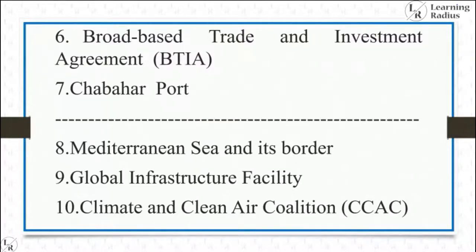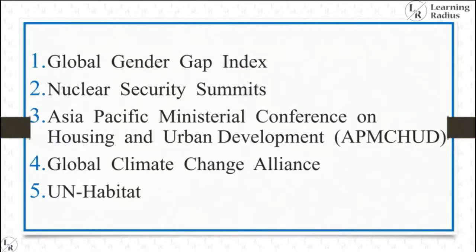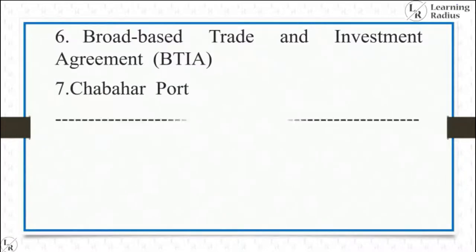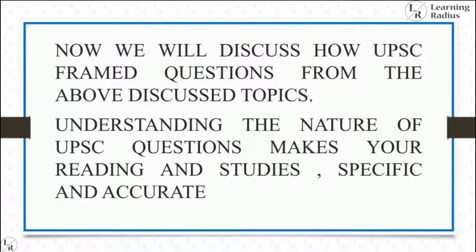From question 8 onwards, the topics are intertwined with international and economic/social development, international and geography, and international and environment — that is why a dividing line is placed there. It's very important to understand the topics from which UPSC frames questions, and moreover how beautifully UPSC frames questions from all these topics.